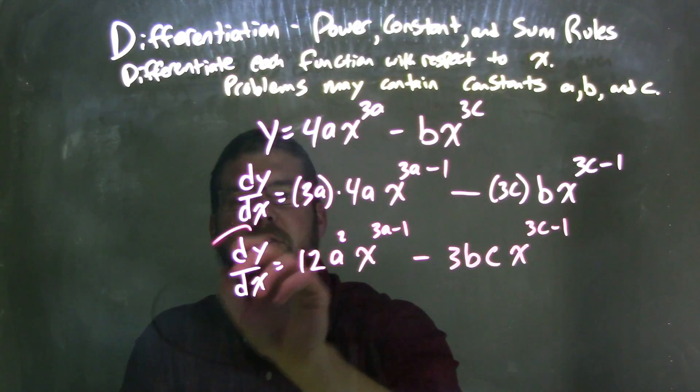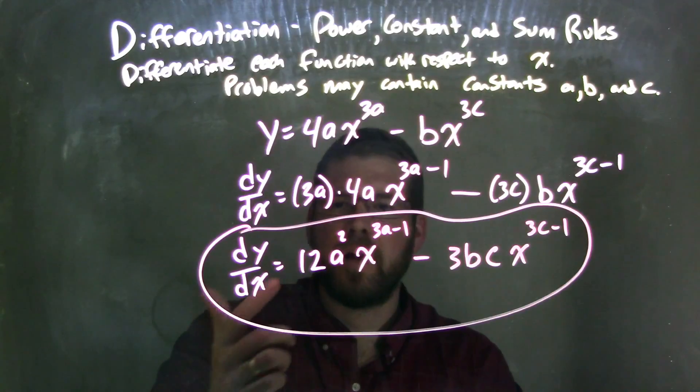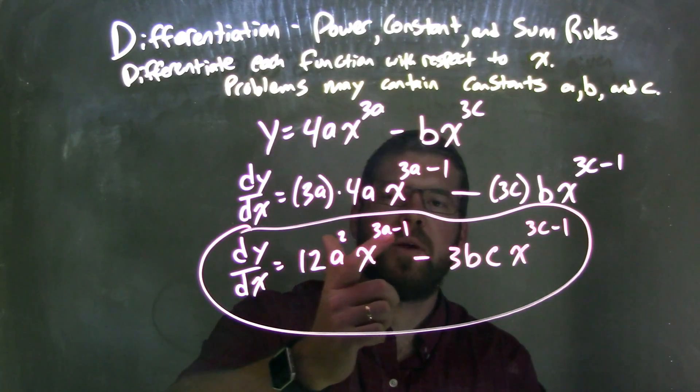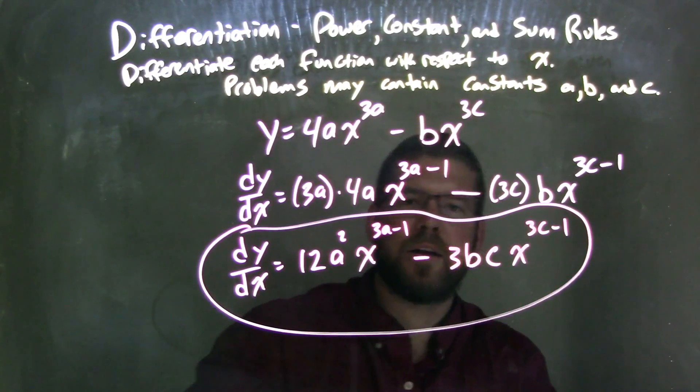And that's it. We actually have our final answer here. It kind of looks pretty complicated, but it's dy dx is equal to 12a squared times x to the 3a minus 1 power minus 3bc x to the 3c minus 1 power.